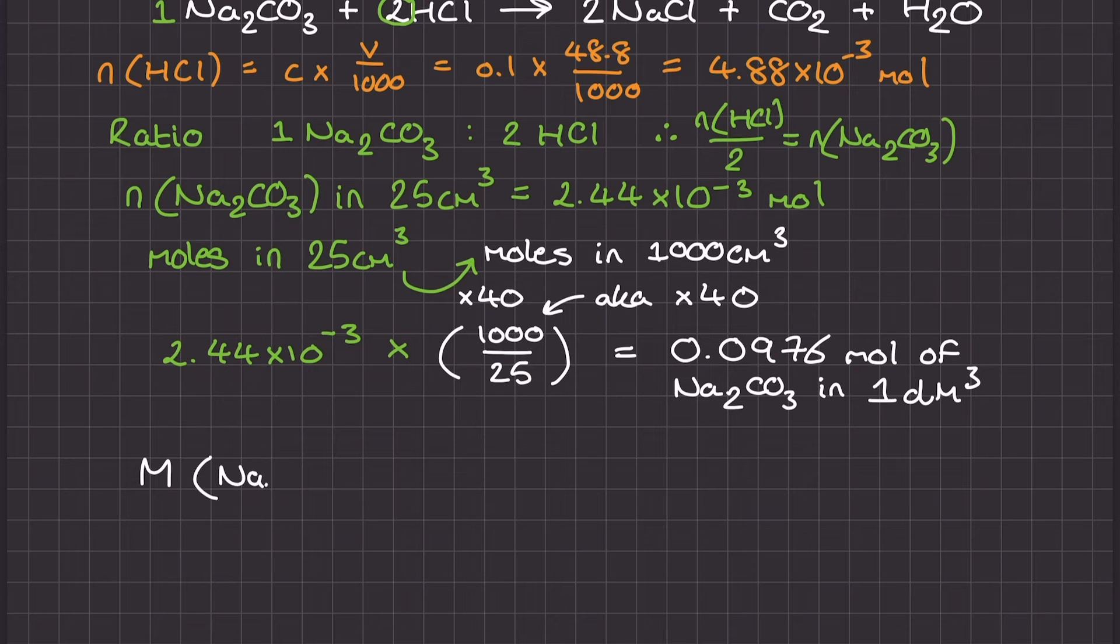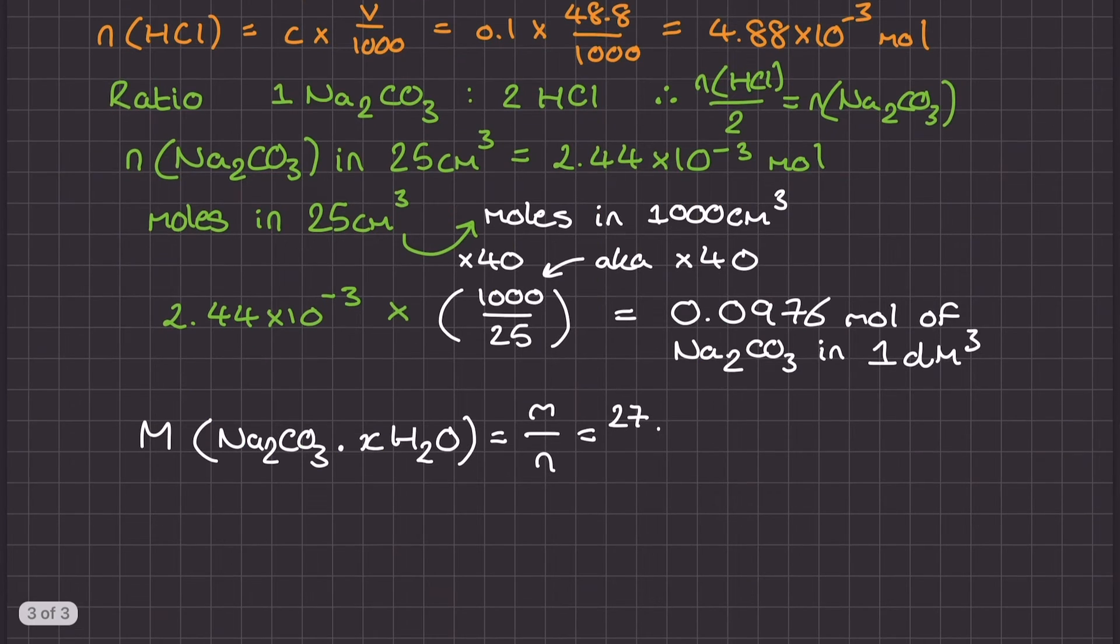Nearly there. Now I know the number of moles in the big 1 decimetre cubed solution, I can find the molar mass of my full hydrated sodium carbonate formula using mass divided by moles. So that's going to be the 27.823 grams divided by the 0.0976 mole that I just calculated in the previous stage. That means that the molar mass of my full hydrated sodium carbonate formula is 285.1 grams per mole.